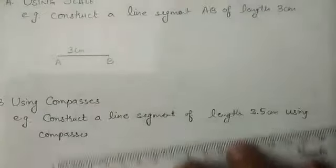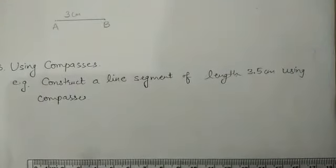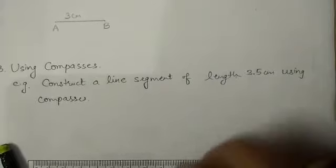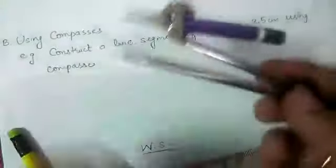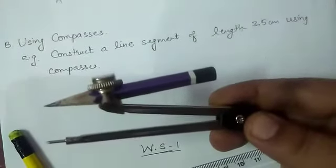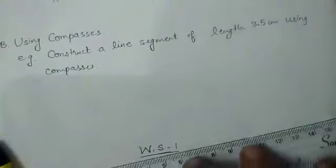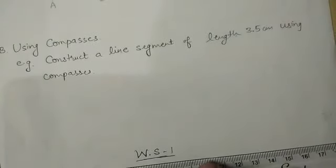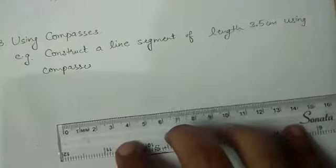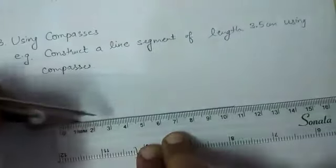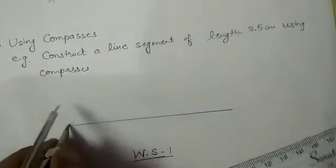Now second method that we have to use in this worksheet is using compasses. This is our compass that we have to use for the construction. Suppose I want to construct a line segment of length 3.5 centimeter.